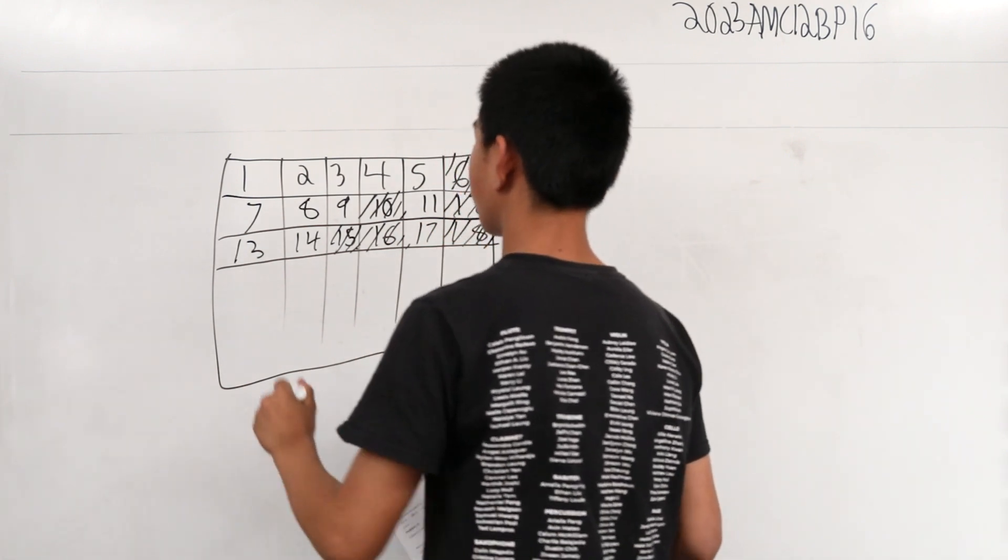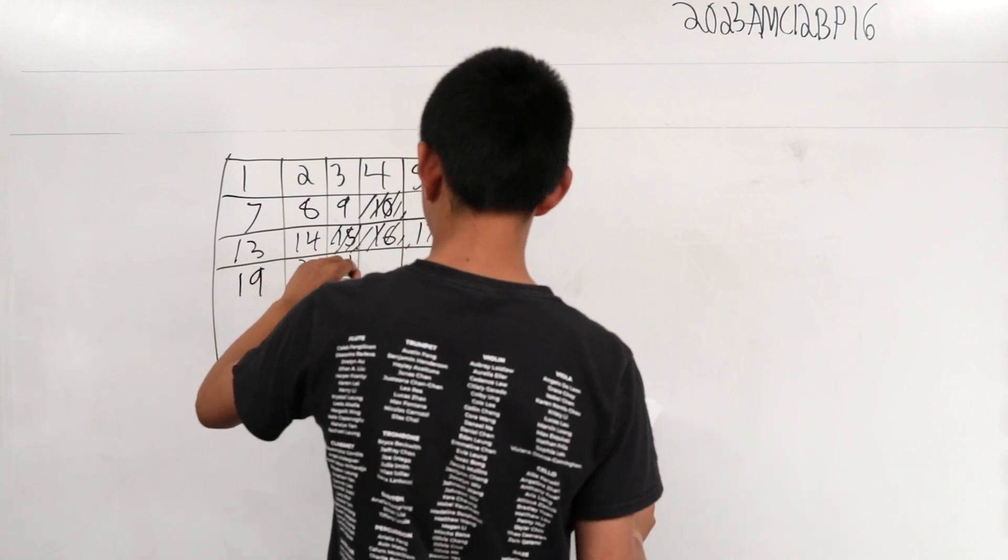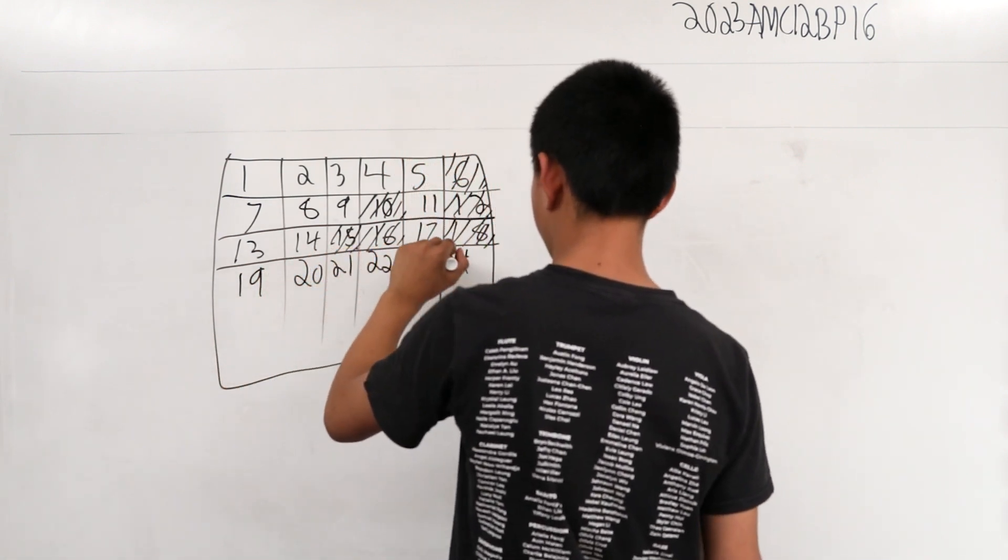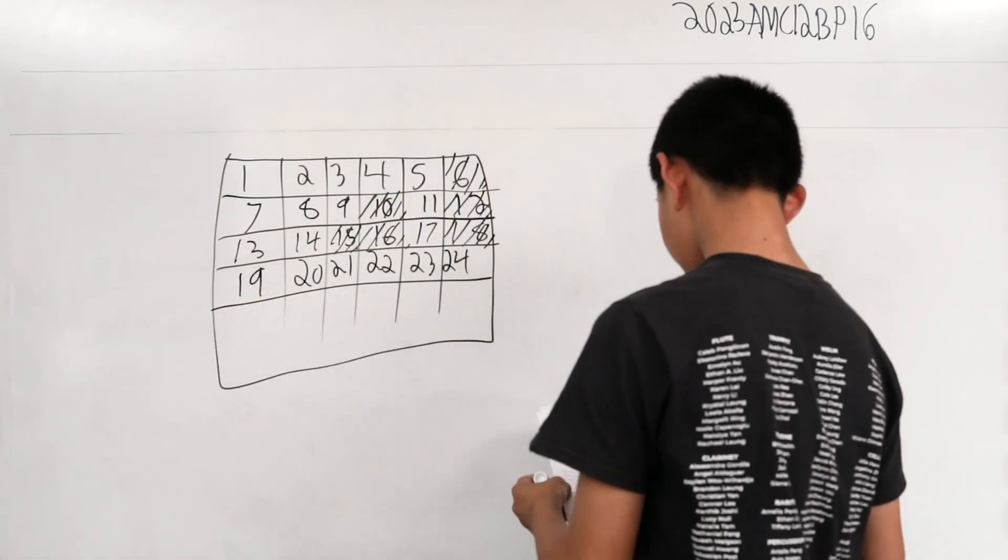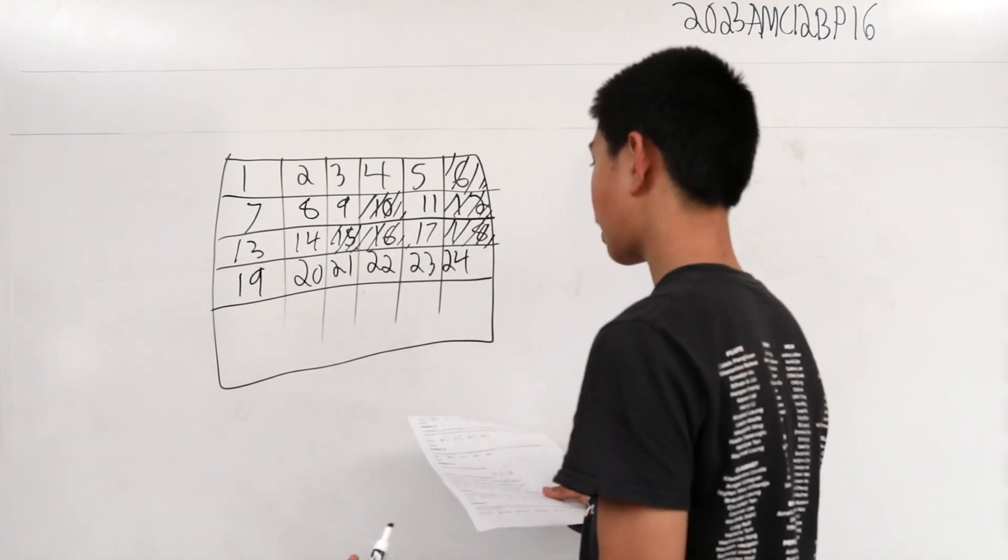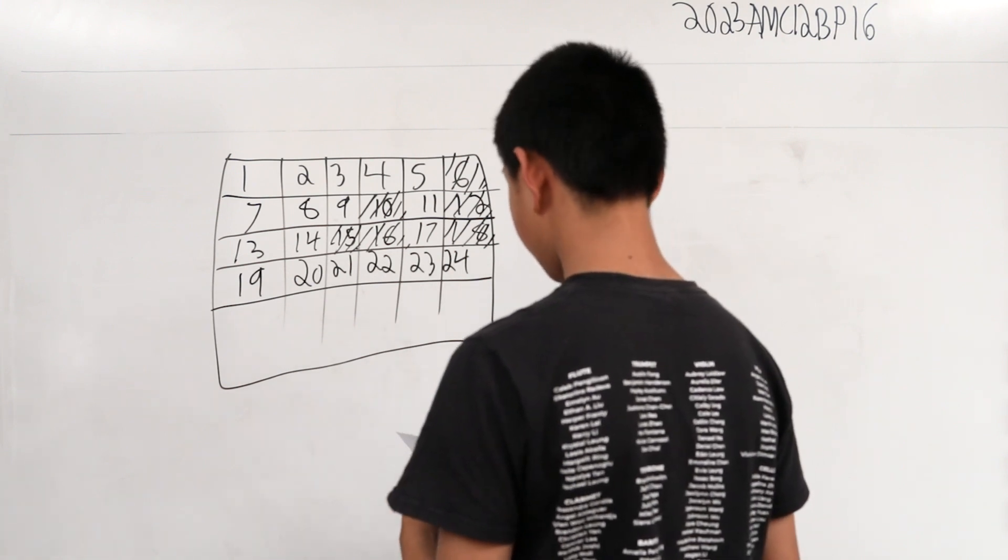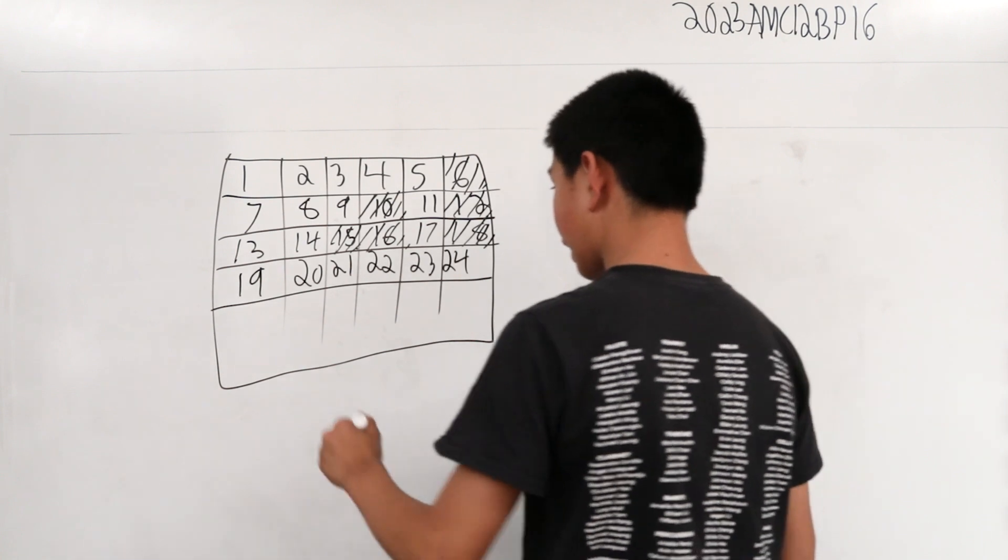Okay, 19, 20, 21, 22, 23, and 24. Let's try this. Can you make 19? That is possible, we can make that. 20 you cannot make.